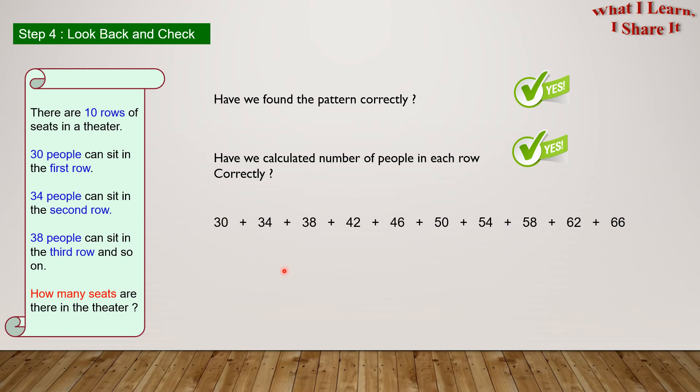Now let's see if we have added all these numbers correctly. 30 plus 34 equals 64. 64 plus 38 equals 102. 102 plus 42 equals 144. 144 plus 46 equals 190. 190 plus 50 equals 240.